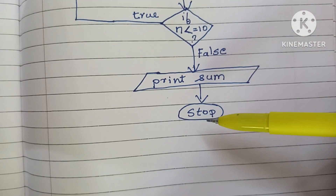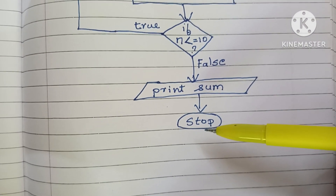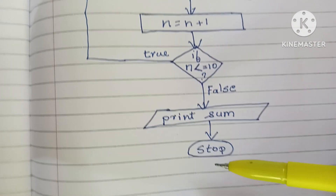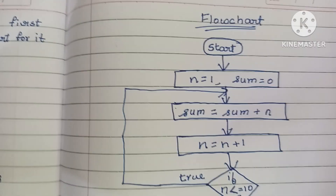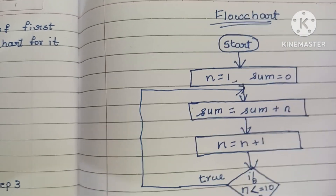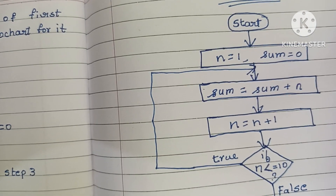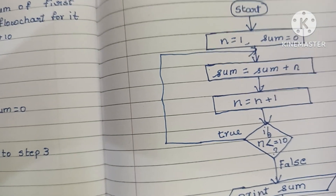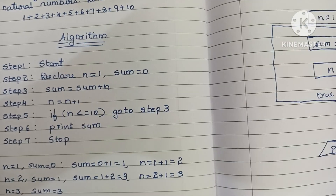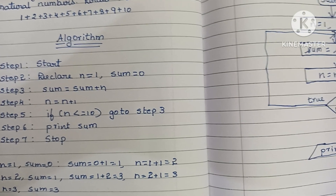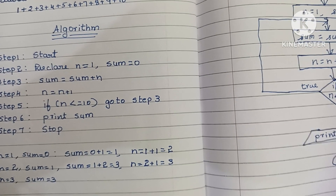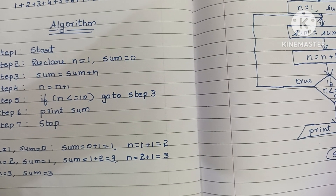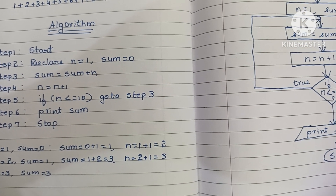Finally we stop the flowchart using a stop statement. This is the flowchart to find the sum of the first 10 natural numbers. If you like this video, please like and subscribe to my channel. Thank you for watching — all the best!